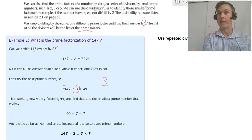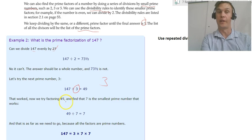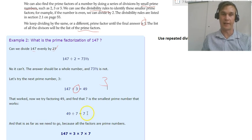Now we keep moving down until we get to 1. So that worked out, now we try factoring 49. And to find that 7 is the smallest prime number that works. So 49 divided by 7 equals 7. And then we have our prime factors there.